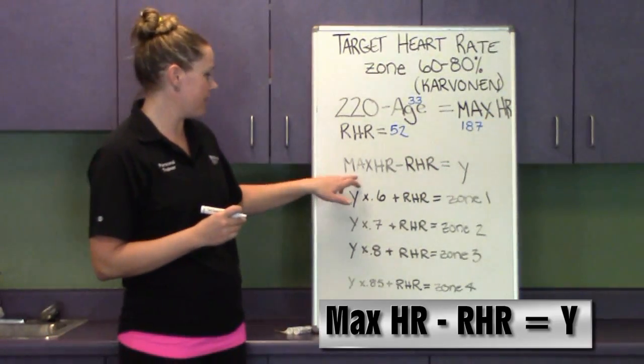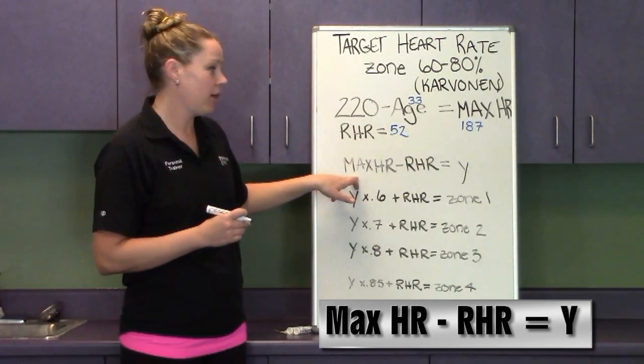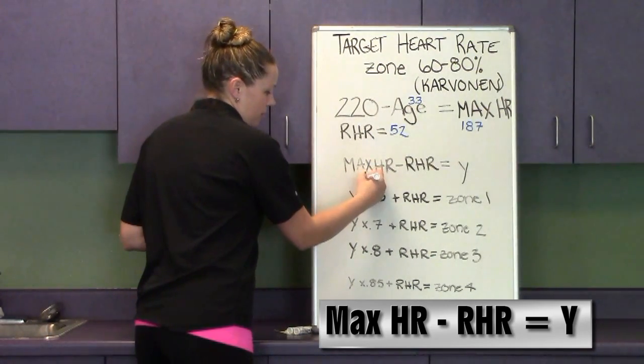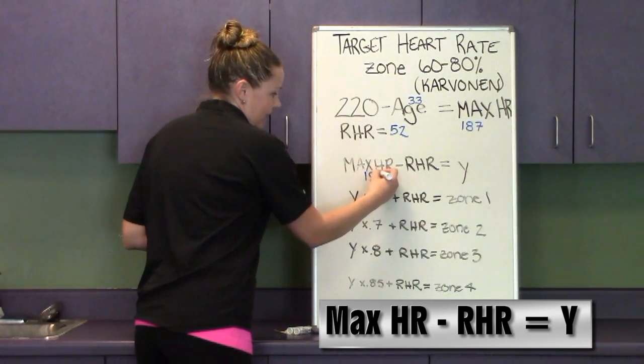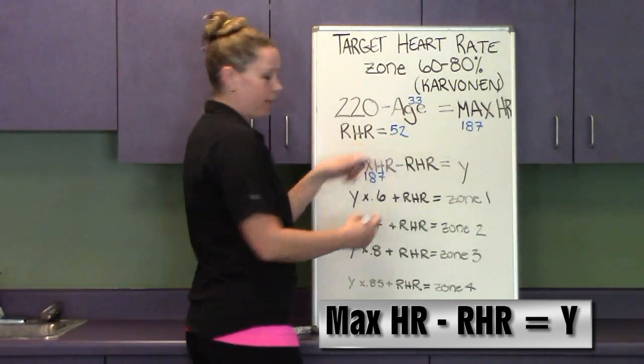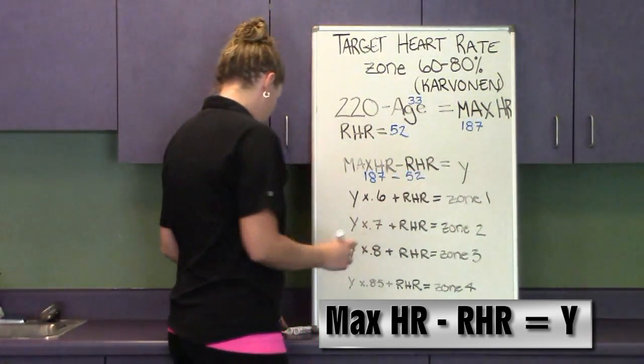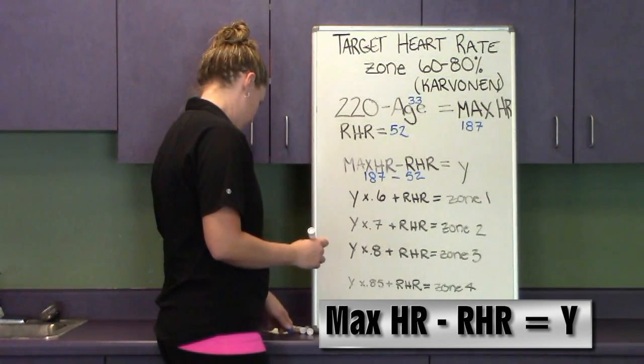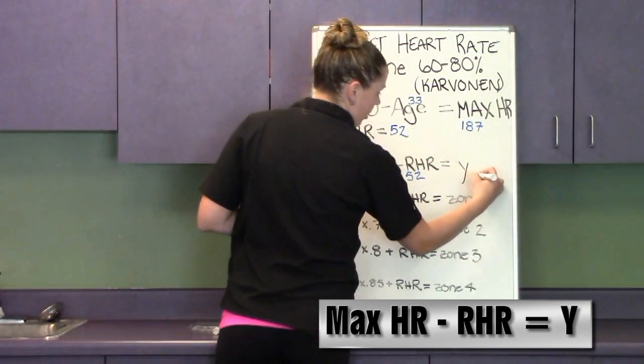I'm going to take those numbers, I'm going to take my maximum heart rate, plug it into the next part of the equation. So 187 minus my resting heart rate, which is 52, and I'm going to get Y, which is 135.